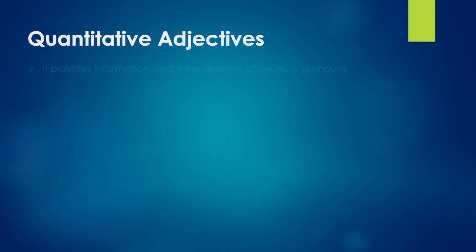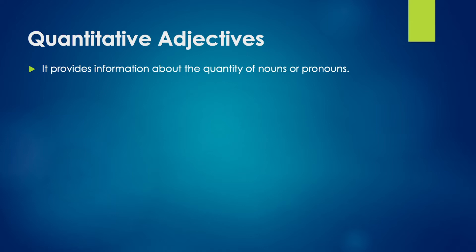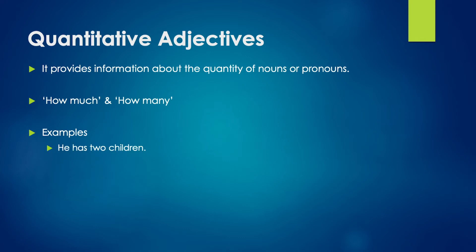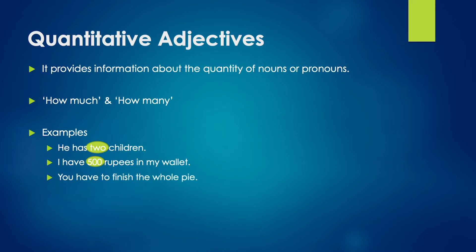Quantitative adjectives provide information about the quantity of nouns or pronouns. This type belongs to the question category of how much and how many. For example, he has two children — the quantitative adjective is two, which answers how many children does he have. I have 500 rupees in my wallet — 500 answers how much money, hence 500 is the adjective. Similarly, you have to finish the whole pie, and the cat gave birth to four kittens. Whole is the quantitative adjective in the first sentence, and four is the quantitative adjective in the second.